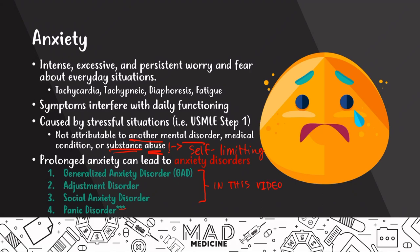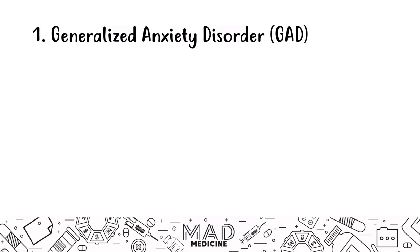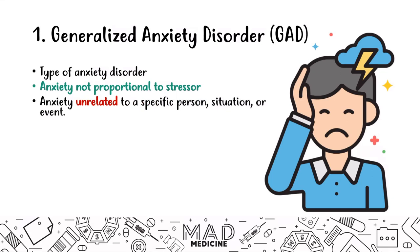Let's start our discussion about generalized anxiety disorder, also known as GAD. Generalized anxiety disorder is a type of anxiety disorder where the anxiety itself is not proportional to the stressor causing it. For example, a patient in college has a paper due in a week. Normally, people get stressed out, but patients with GAD will feel so anxious they might start shutting down and not be able to complete the task. This anxiety is also usually unrelated to a certain situation — it happens in general, overall, by itself.